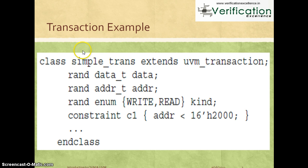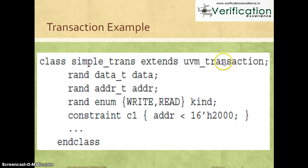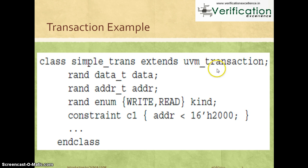Let's pick the same example of a read or write transaction happening on the bus. Here is a simple class definition — class simple_transaction — which extends from the UVM transaction. The UVM base library provides a base class called UVM transaction. Any transaction you define for your test bench needs to extend from the UVM or OVM transaction, based on what methodology you are using.